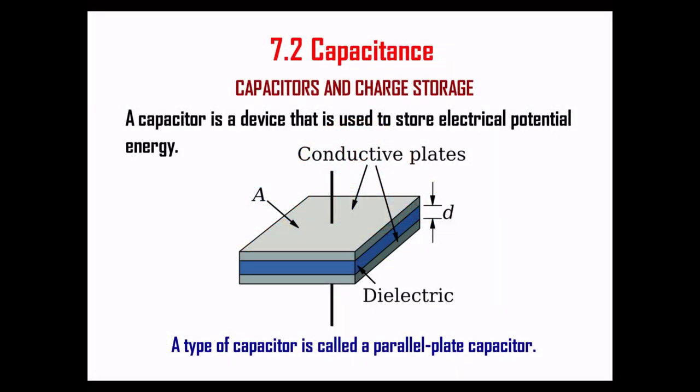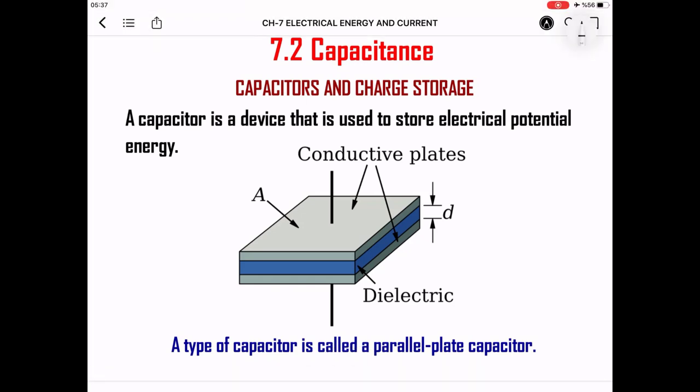Hi guys, welcome to section 2 of chapter 7. It is the capacitance. In this chapter we will discuss about the capacitors, charge storage, and the capacitance of the capacitor. First of all, a capacitor is a device which is used to store electric charge and energy. It is a bit similar to a rechargeable battery, but it is not a battery. A commonly used one is called the parallel plate capacitor.